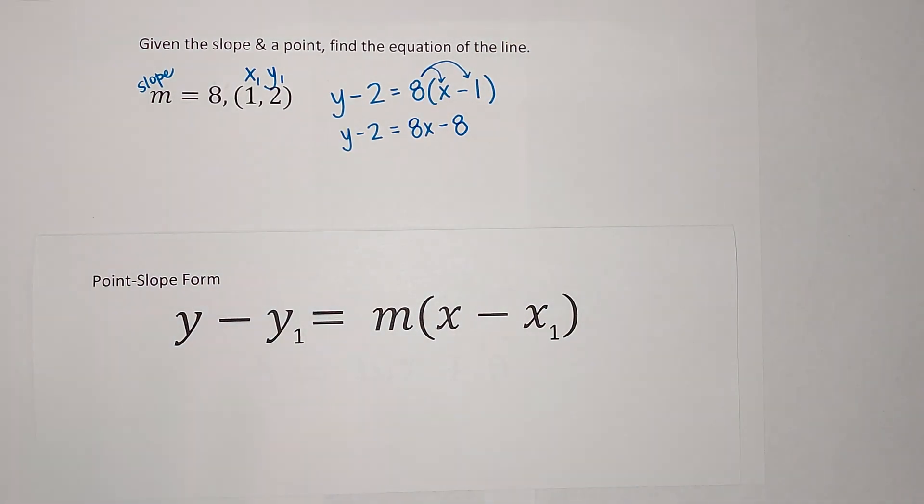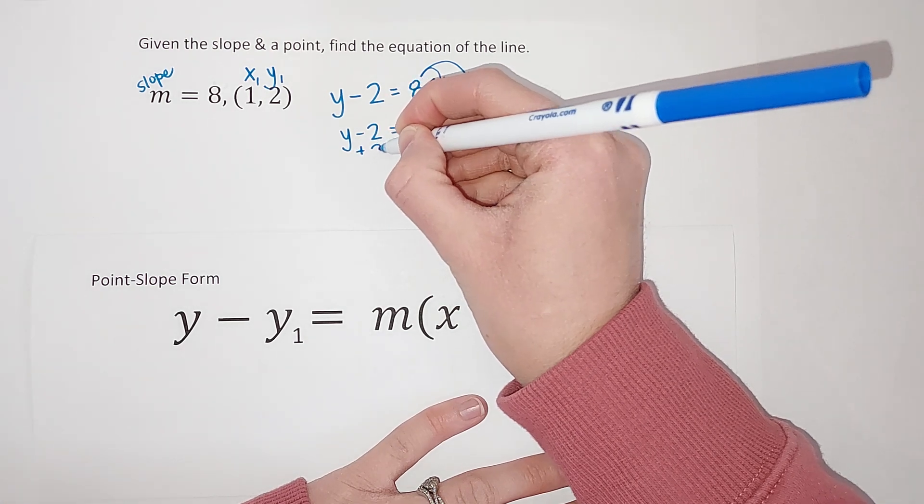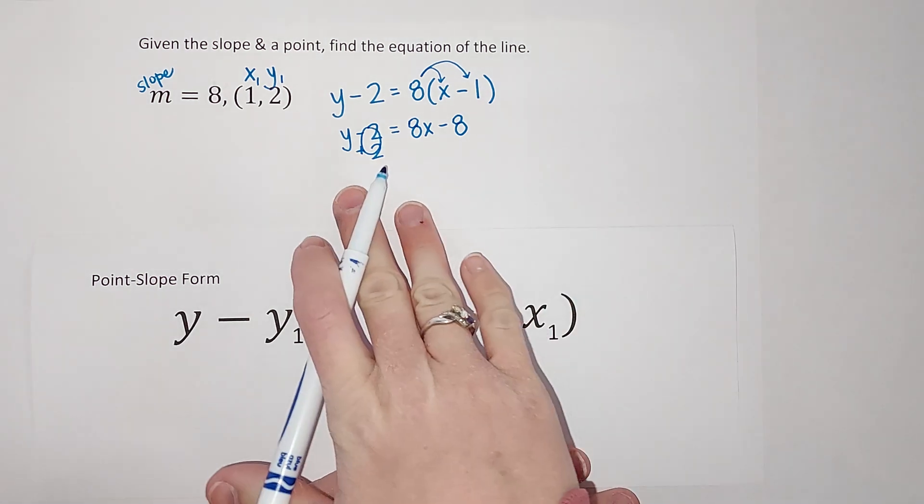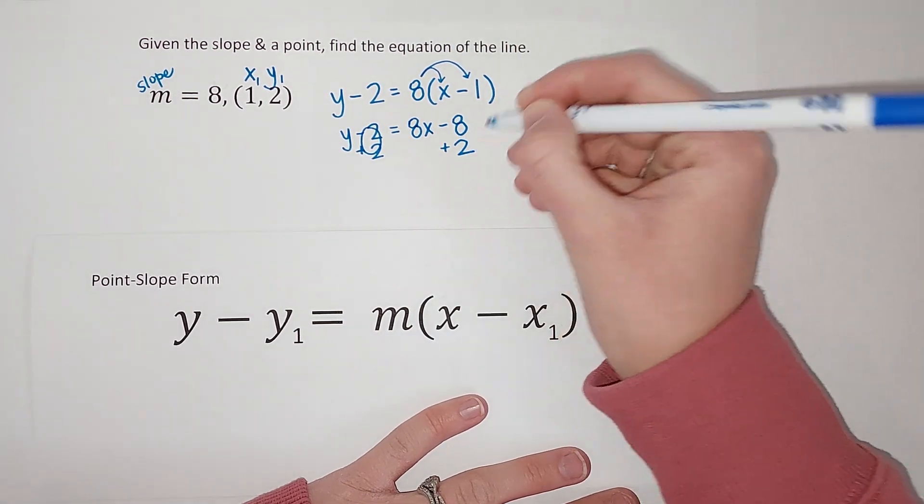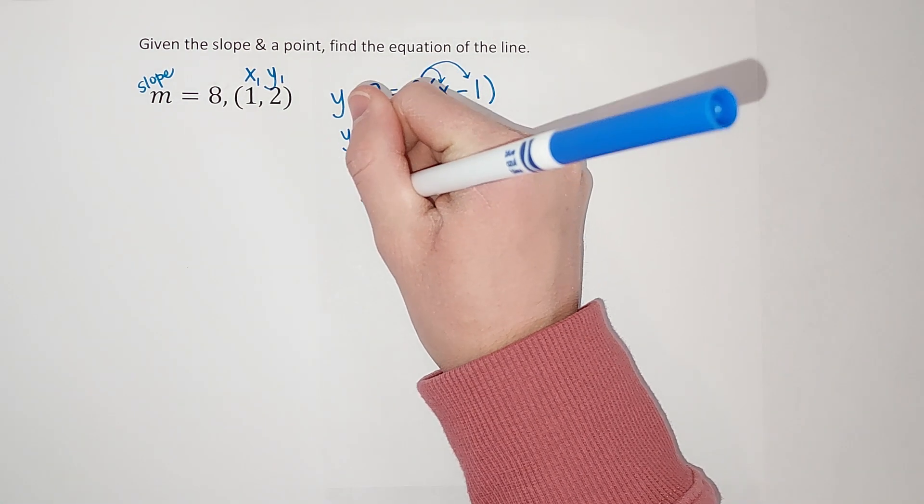We're getting closer, right? The parentheses are gone. We're feeling good. But I want Y by itself. So to get rid of a negative 2, I'm going to add 2. Why? Because then they go away. But I can't just add 2. If I add 2 to this side, I got to add 2 to this side to keep my equation balanced. When I do that, I'm left on this side with just a Y. Yay!